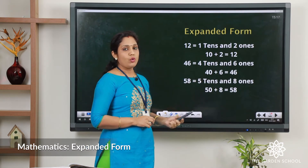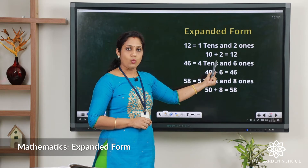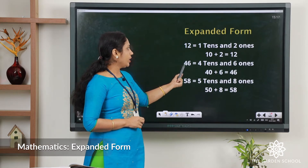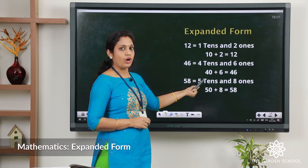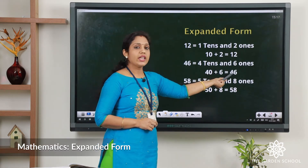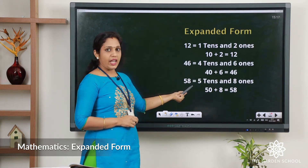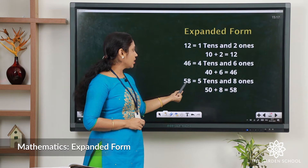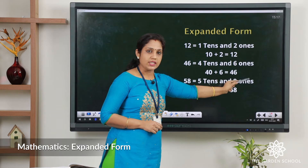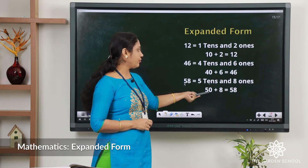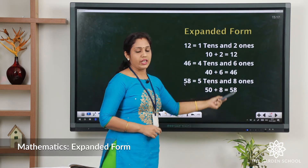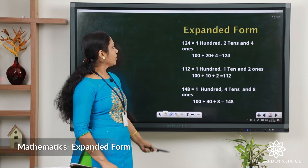We count always from the right side, that is from the ones place, but when we write we write it from the left side. So four tens makes 40 plus six ones makes 6, and the number we get is 46. Next: 58. Here it is eight ones and five tens. We write five tens and eight ones — five tens means 50, plus eight ones that is 8 itself, so we get 58.